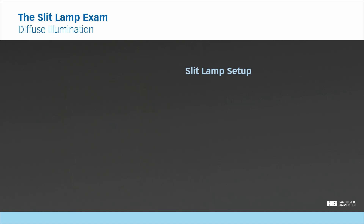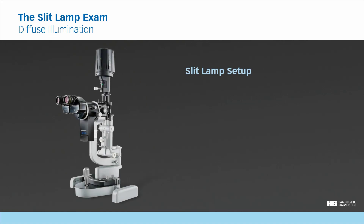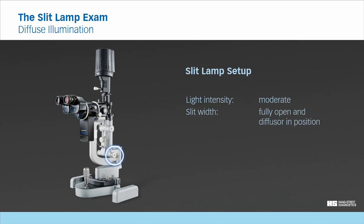Slit lamp setup. To set up the slit lamp, choose a moderate light intensity. Bring the diffuser in position and open the slit completely. Alternatively, you can switch on a dedicated background illumination. Select an illumination angle of around 30 degrees to ensure even illumination. A magnification of 6 times or 10 times is recommended.